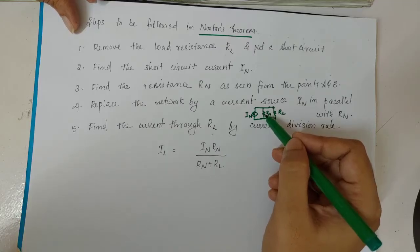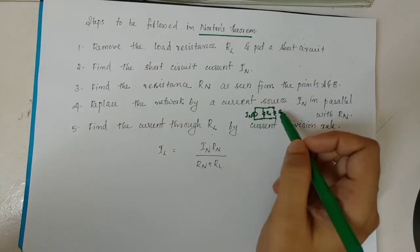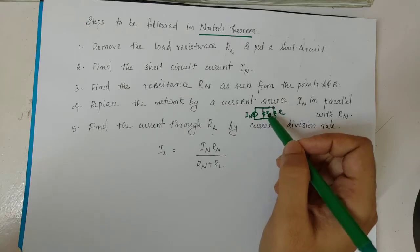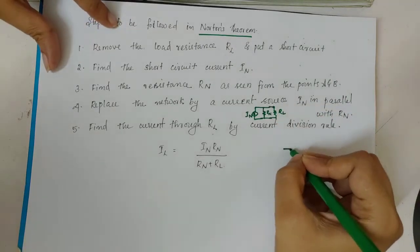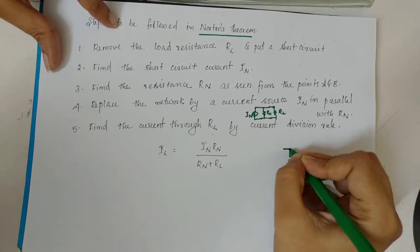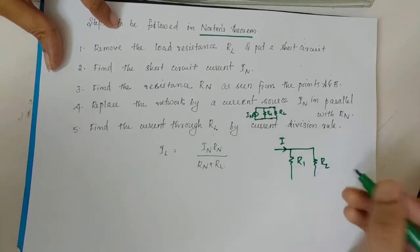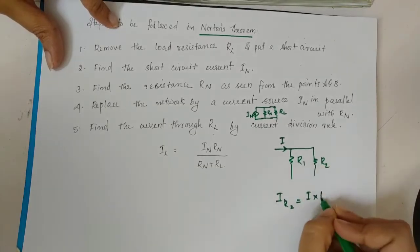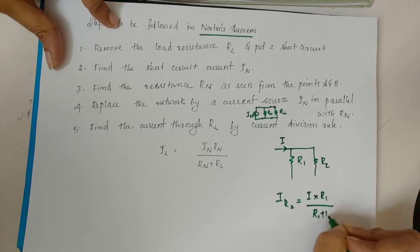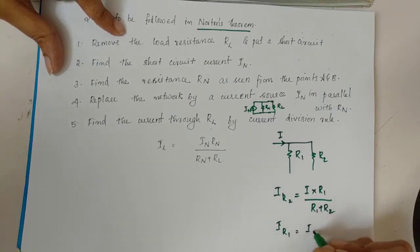The resistance is converted into current. The current through the load is In into Rn divided by Rn plus RL. Using the current division rule: I into R2 divided by R1 plus R2.